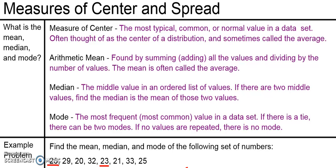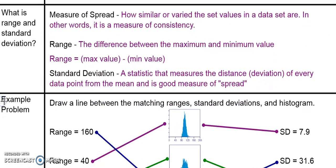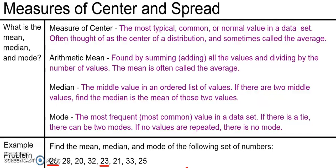Before we wrap up, remember the key points. A measure of center is the typical or common value in a data set, and there are three ways to measure it: the mean, where you add everything together and divide by the number of values; the median, where you find the middle number; or the mode, the most common number. A measure of spread is how similar or varied the values in a data set are — a high spread means data is very spread out, a low spread means it's clumped together and consistent. There are two ways to measure it: the range, where you take the maximum and subtract the minimum, or the standard deviation, which takes into account all the different data points, not just the maximum or minimum. Thanks for watching, and we'll see you next time.